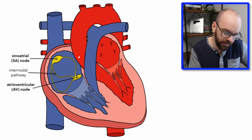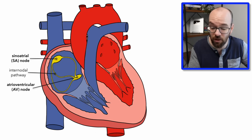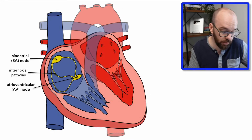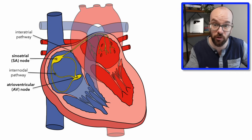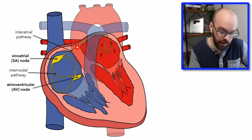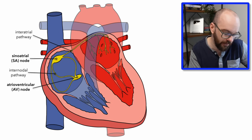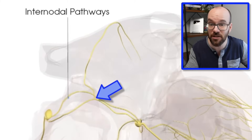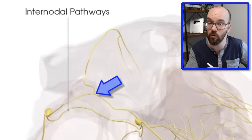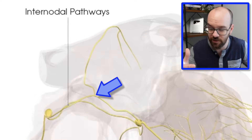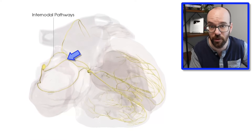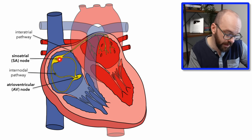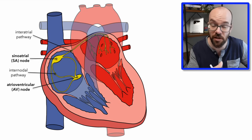The depolarization would eventually make it to the left atrium on its own, but that would take a long time without the interatrial pathway, which runs from the SA node into the left atrium and conducts the signal very quickly to depolarize it. Most diagrams show the interatrial pathway coming directly from the SA node, but in the Anatomage images it actually branches off one of the internodal branches, even though most diagrams show it coming from the SA node directly.